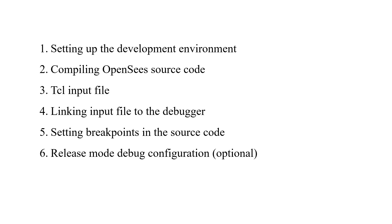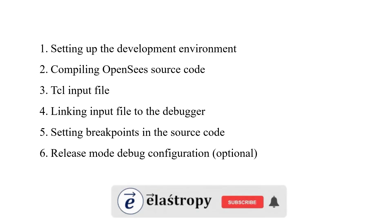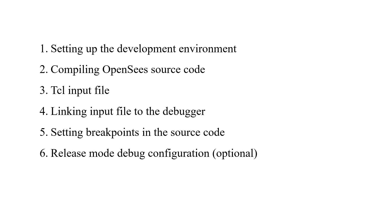After that, you have to choose one TCL input file — the one that you are planning to use in this debugging process. After that, you have to link the input file to the Visual Studio debugger. After that, we will set some breakpoints in the OpenSees C++ source code, and the last step is some release mode configuration for debugging.